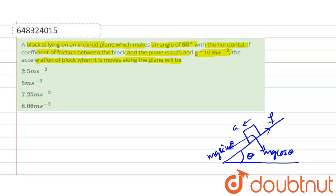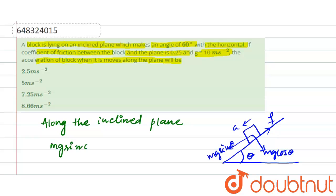Along the inclined plane: mg sin theta minus mu mg cos theta, because mu mg cos theta is the frictional force, which is equal to ma. If the block is moving in a direction along the plane, having the acceleration a.